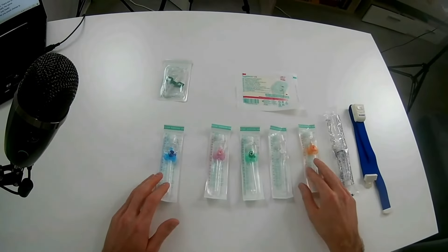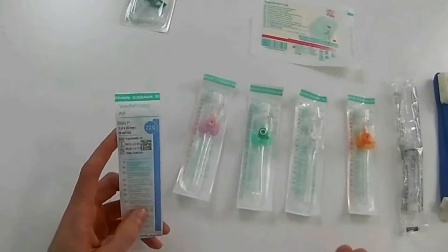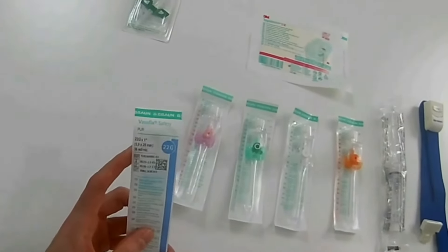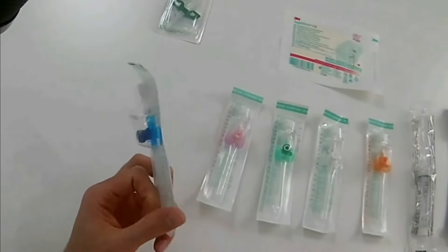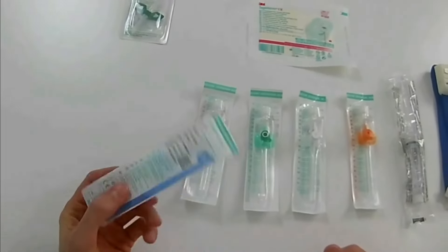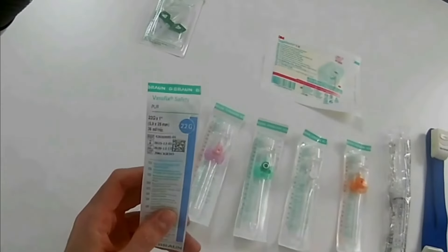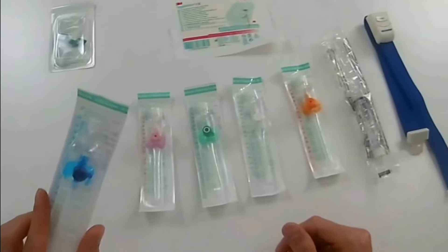They come in different sizes and different colors for different needs that you may have. The smallest one is the blue one, which is the 22G. The bigger the G, the smaller the intravenous catheter. There is a smaller one which is used for babies and very small toddlers, which is yellow color I believe, but I have never seen it or used it.